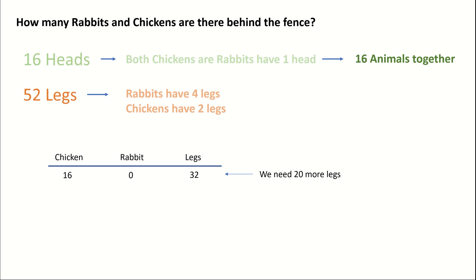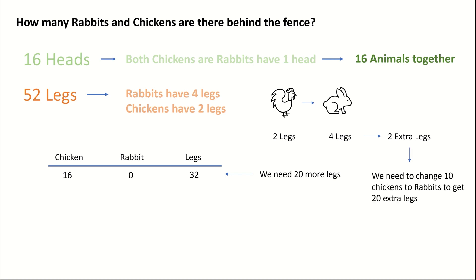How are we going to get these 20 more legs? Well, if you go back to the rabbits and the chickens — a chicken has two legs, a rabbit has four legs. So for every chicken that you change into a rabbit, you're going to get two extra legs, because each rabbit has two more legs than a chicken. And so, to get 20 extra legs, we will need to change 10 chickens into rabbits.